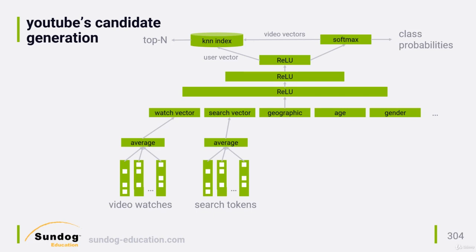Not enough users rate videos explicitly for the data to be useful. Instead, they rely on implicit signals, such as which videos you actually watched and what you searched for. This implicit view and search data is itself sparse, and as we learned when covering deep learning recommenders, dealing with that sparsity is a huge issue. Their solution was to break up the sparse representation of video IDs and search tokens for each user into a variable length sequence of sparse data, mapped to a dense layer of a fixed length, suitable for input to a neural network in an embedding layer.